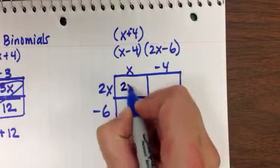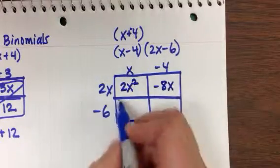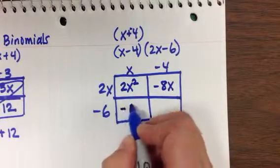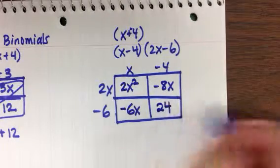2x by x gives me 2x squared. 2x times negative 4 is negative 8x. Negative 6 times x is negative 6x. And negative 6 times negative 4 is a positive 24.